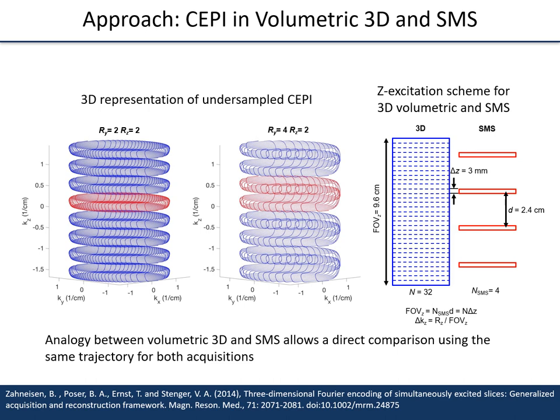Although historically SMS has been regarded as a 2D acquisition, our group recently proposed the treatment of SMS as a form of 3D acquisition in analogy to volumetric 3D imaging, as shown on the right-hand slide here. In this framework, identical CEPI trajectories can be used for both 3D volumetric or SMS acquisitions. For the SMS acquisition, the 3D trajectory is shown in red at an undersampling factor of 4 and 8. For 3D volumetric imaging, the CEPI trajectory is then simply shifted in KZ using Z-phase encoding gradients prior to the readout. The complete set of phase encodings leads to the K-space coverage of the blue plus the red trajectories.